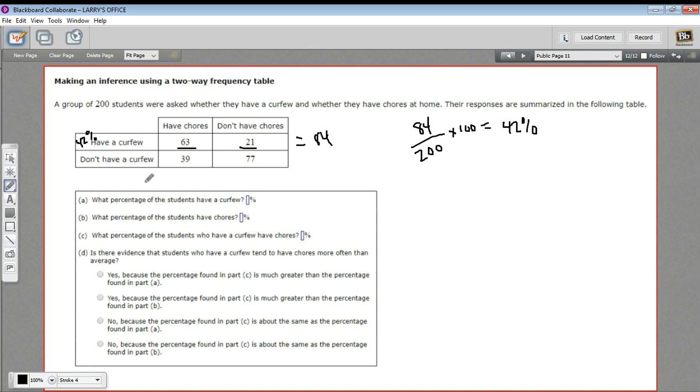The next question is, what percentage of students have chores? So now, we're going to have to add down here, the 63 plus the 39, and that is 102. And what percentage is, well, we'll use the same kind of calculation, 102 out of the 200 students. That's going to give us a decimal, and then we'll multiply that by 100. So 102 divided by 200, and then times 100. That's going to be 51%. So have chores is 51%. So about half of students have chores. A little less than half have a curfew.